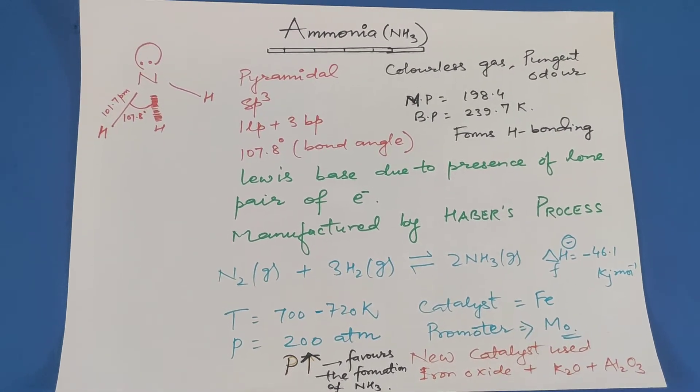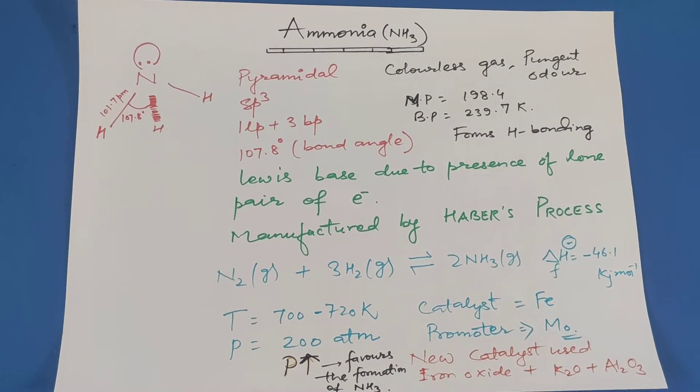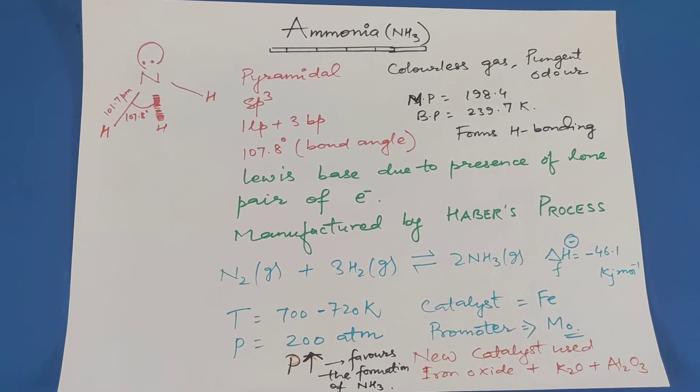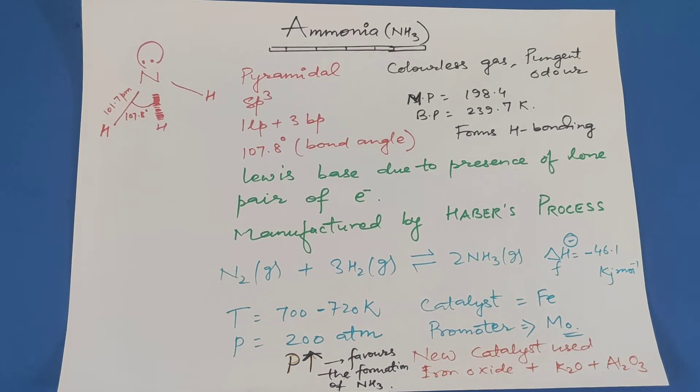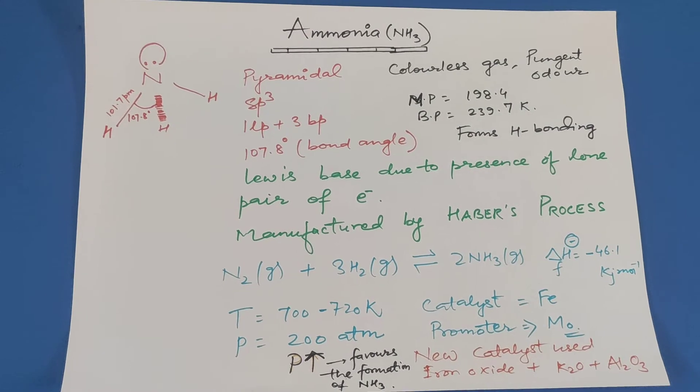It is manufactured by Haber's process. Nitrogen gas reacts with hydrogen gas to form ammonia. The enthalpy of formation is minus 46.1 kilojoules per mole. That means this reaction is exothermic.